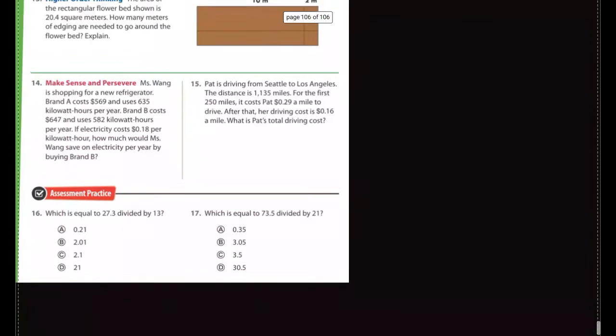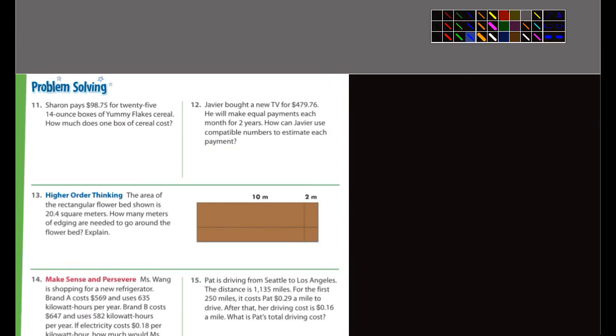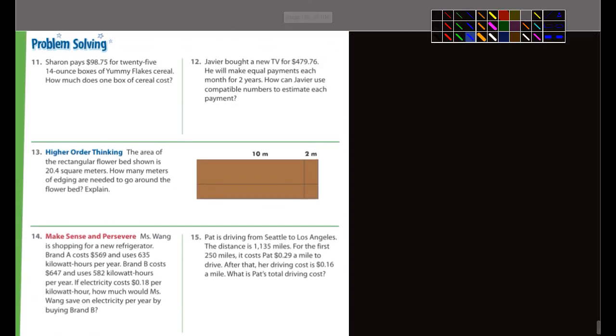Let's look at the next page. Sharon pays $98.75 for 25 14-ounce boxes of Yummy Flakes cereal. How much does one box of cereal cost? So there's some information here you don't need. What don't you need? The fact that each box is 14 ounces, that doesn't matter, that's irrelevant. So what are we doing here? You're dividing 98.75 by 25.